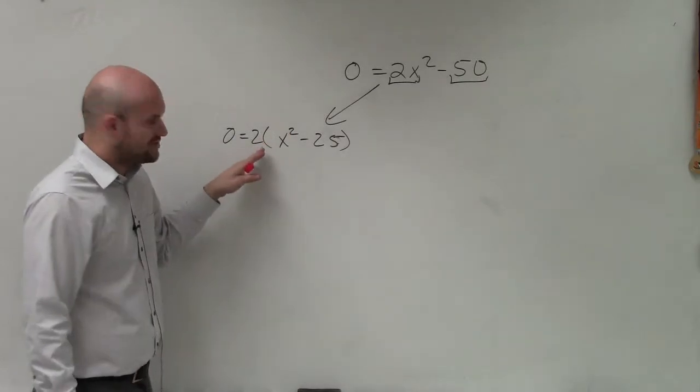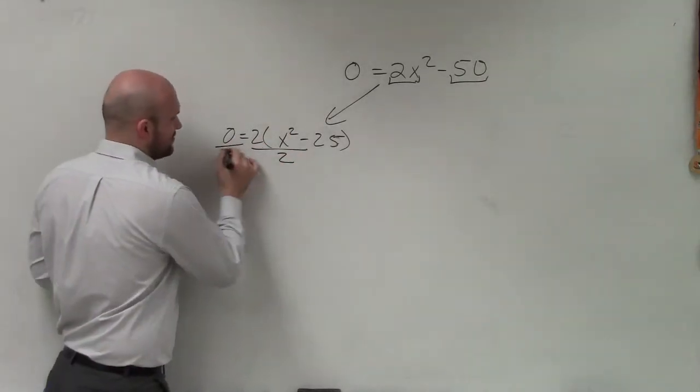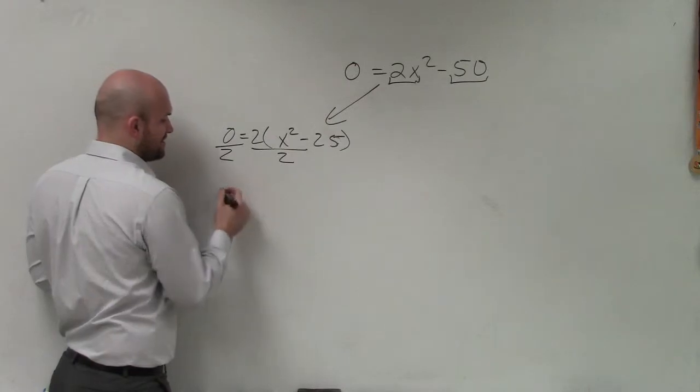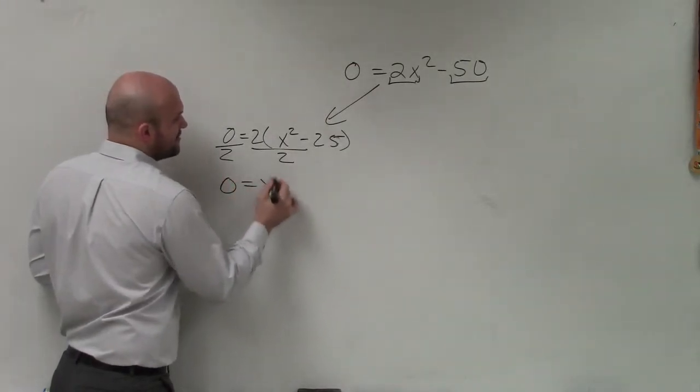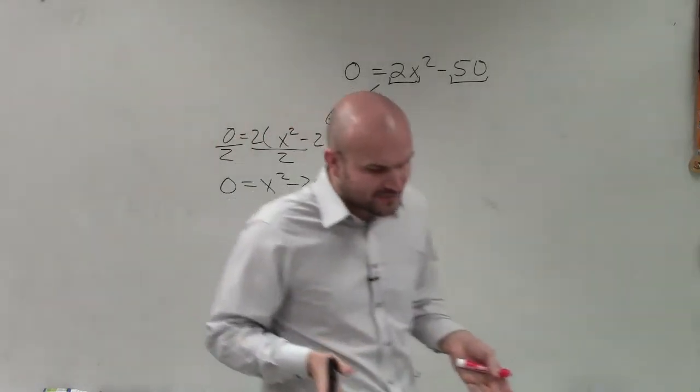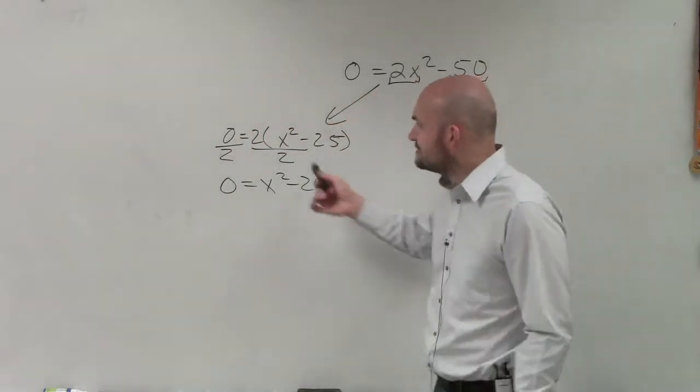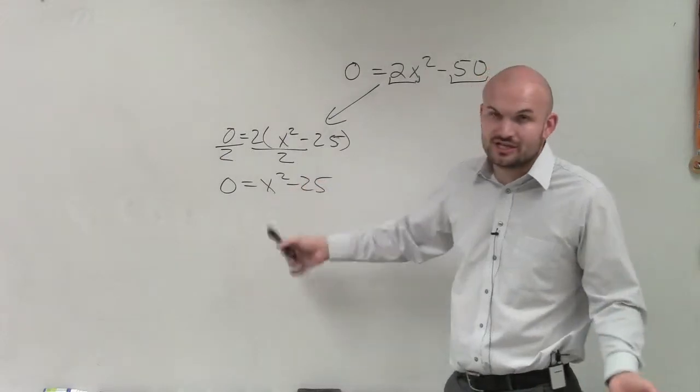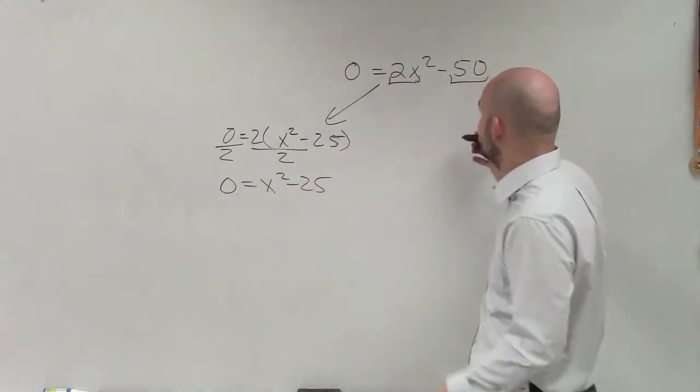Now that I factor out the 2, I can actually divide both sides by 2. That's an operation. Well, 0 divided by 2 is just going to give us 0. And the reason why I was trying to go through this is because I wanted you to understand that by dividing out that 2 or factoring out that 2, you're not changing the answer. And I'll show you why you're not changing the answer.